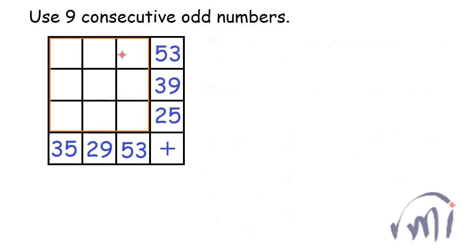The sum of the second column is 29 and sum of the third column is 53. And the numbers which we have to fill over here are actually nine consecutive odd numbers.